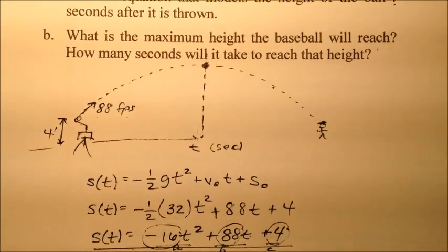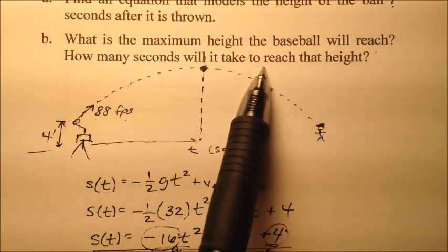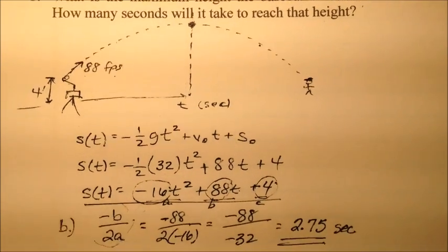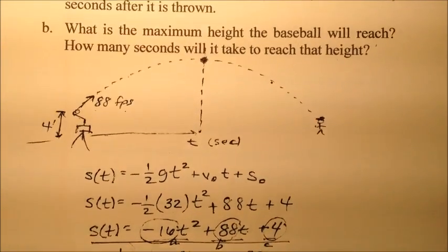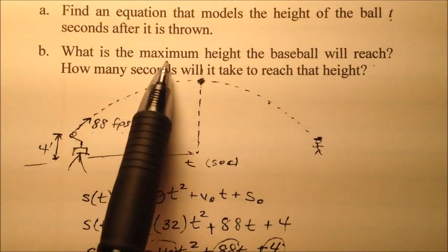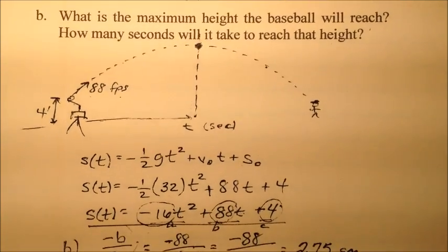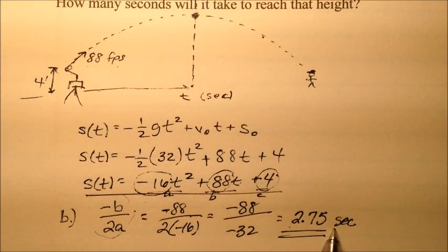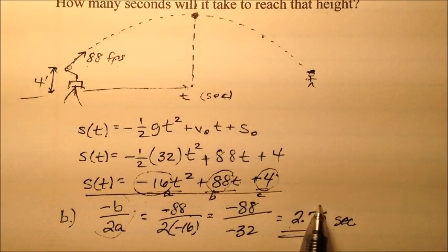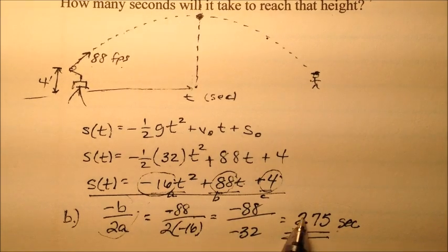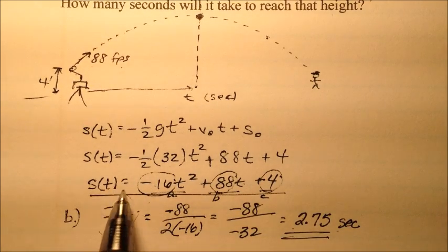That's the second question: how many seconds will it take to reach the height? 2.75 seconds. The first question asked: what is the maximum height the ball will reach? Now that we have 2.75 seconds, we can plug that into our position function to get the height. I'm going to find s(2.75).